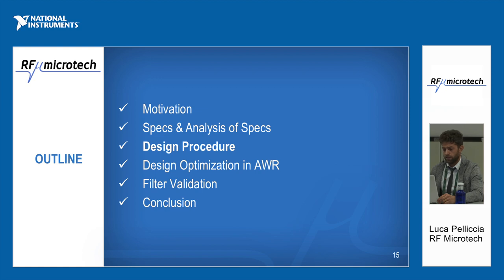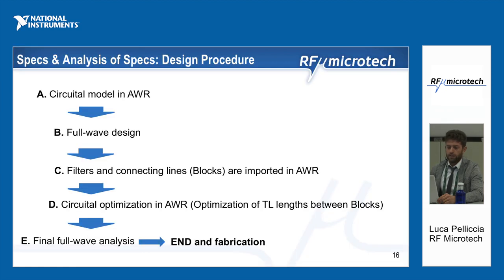I will now present the design procedure. The first step was a circuital model in AWR to design the desired response. Then we performed full wave design in Ansys HFSS. Next, all parts designed in the full wave simulator were combined in AWR, and a circuital optimization of the connections between these blocks was done in AWR. Finally, we carried out a final full wave analysis to check agreement between the circuital optimization and the complete full wave simulation.